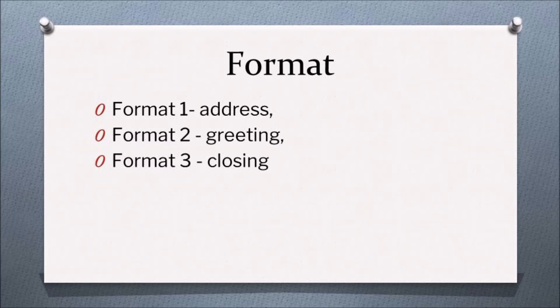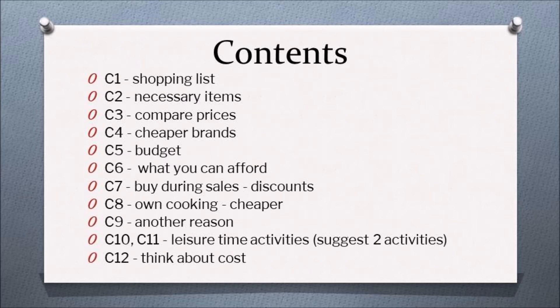Here is the format for the informal letter. Format 1 is the address. Format 2 is the greeting. Format 3 is the closing. The content points are: C1 shopping list, C2 necessary items, C3 compare prices, C4 cheaper brands, C5 budget, C6 what you can afford, C7 buy during sales with discounts, C8 own cooking — cheaper, C9 another reason, C10 and C11 leisure time activities — suggest two activities, and C12 think about cost.